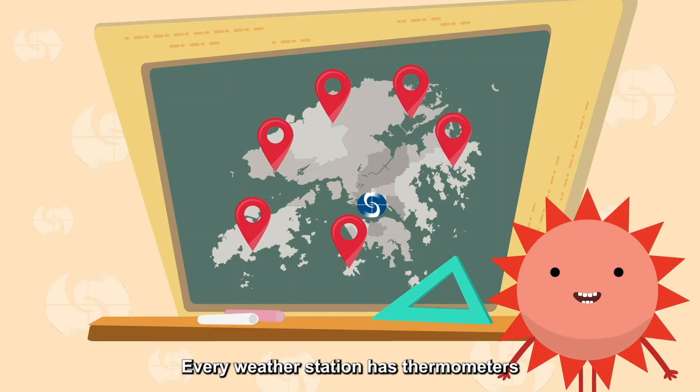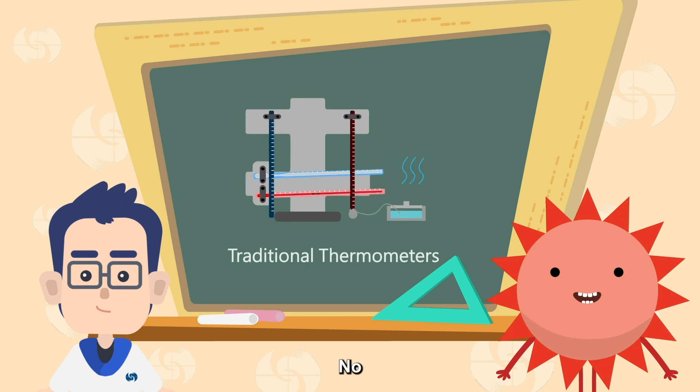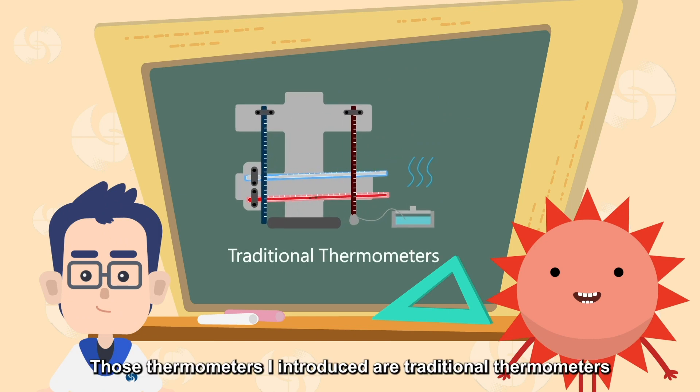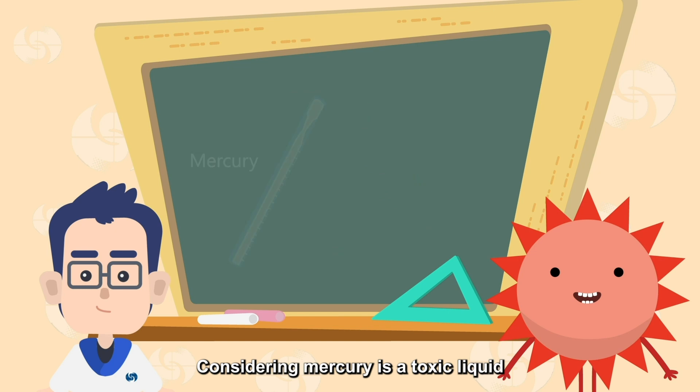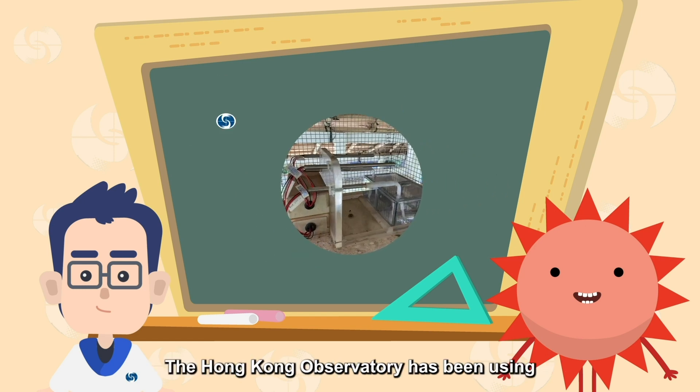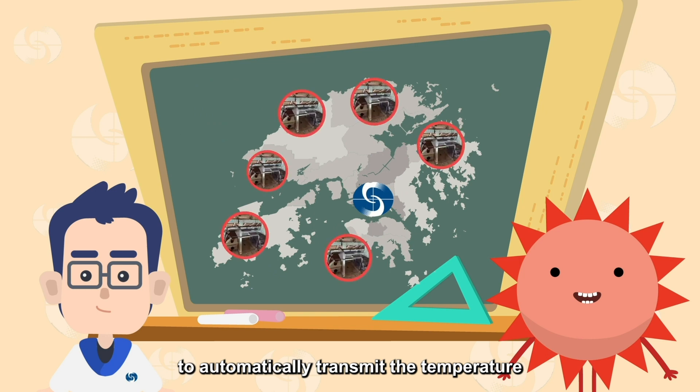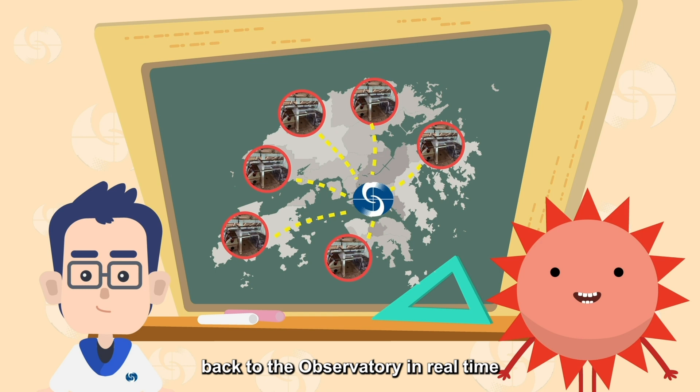Every weather station has thermometers. Do weather observers travel all over Hong Kong every day to collect data? No, those thermometers I introduced are traditional thermometers for backup purposes. Considering mercury is a toxic liquid, since 2020, the World Meteorological Organization has recommended replacing mercury thermometers with other thermometers. The Hong Kong Observatory has been using platinum-resistant thermometers since 1984 to automatically transmit the temperature, maximum and minimum temperatures from all weather stations back to the observatory in real time.